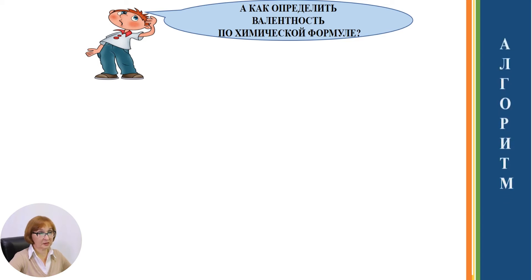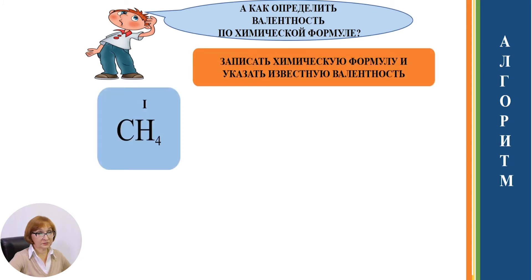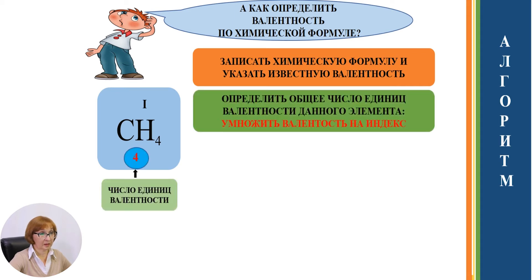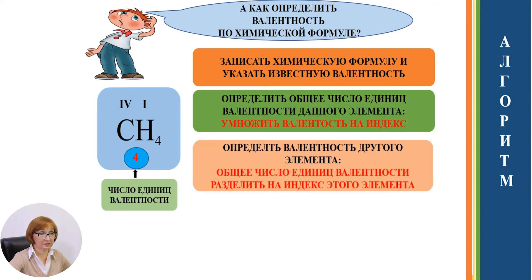А можно ли определить валентность по химической формуле? Давайте составим алгоритм. Запишем химическую формулу вещества и укажем известную валентность. CH4: валентность водорода постоянная, равна 1. Определим общее число единиц валентности данного элемента: умножим валентность атома водорода на индекс и получим 4 — число единиц валентности. Затем определим валентность другого элемента: общее число единиц валентности разделим на индекс этого элемента. Число единиц валентности формулы CH4, равное 4, разделим на индекс углерода, то есть на единицу. Получим 4.